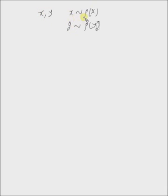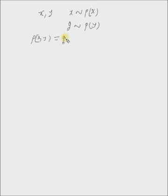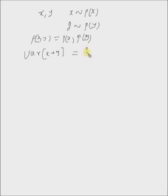Consider two random variables x and y, where x has distribution p of x and y has distribution p of y. Now, if x and y are independent, then we have p of x, y is equal to p of x times p of y. Our goal is to show that variance of x plus y equals variance of x plus variance of y, provided x and y are independent.